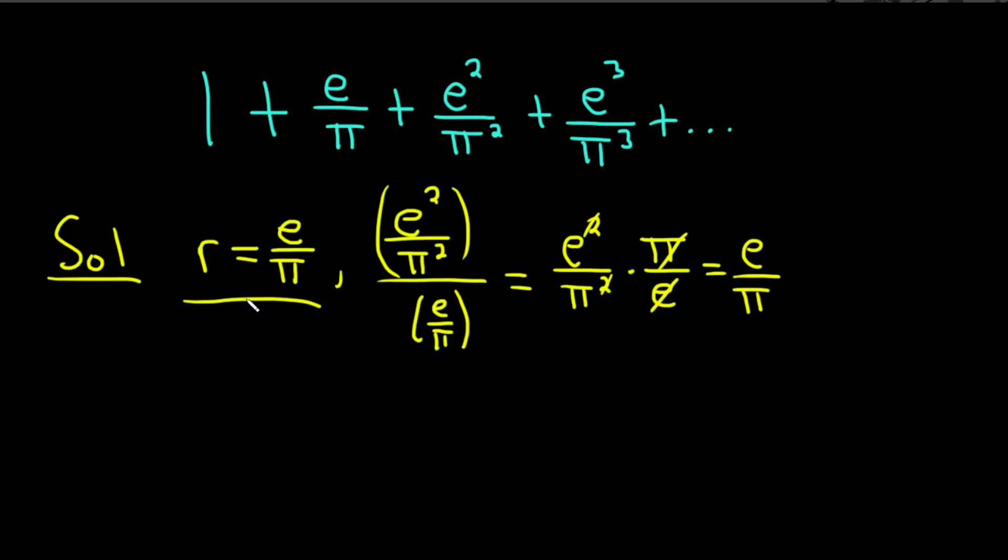And so e is like 2.7 something and pi is like 3.14 or something. So this is less than one in absolute value, so our series is going to converge. So if the absolute value of r is less than one, then the series converges by what people call the geometric series test. So we know it converges and we know it's equal to a number.